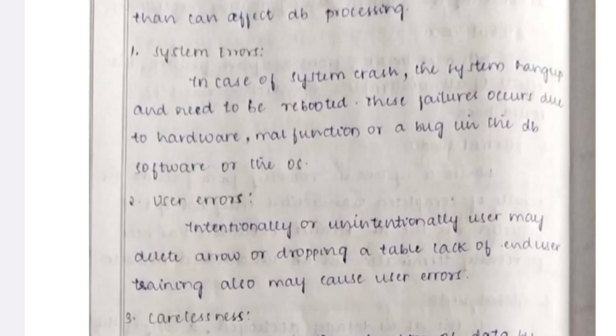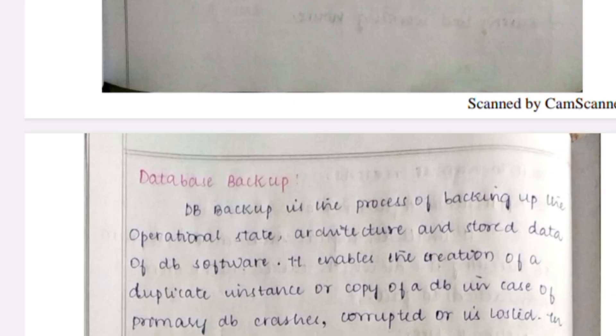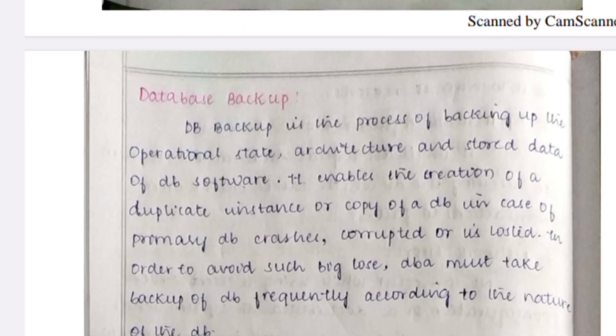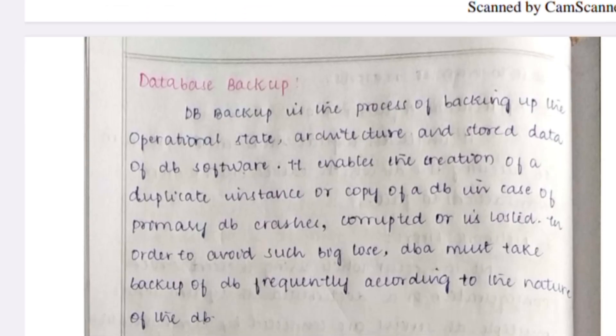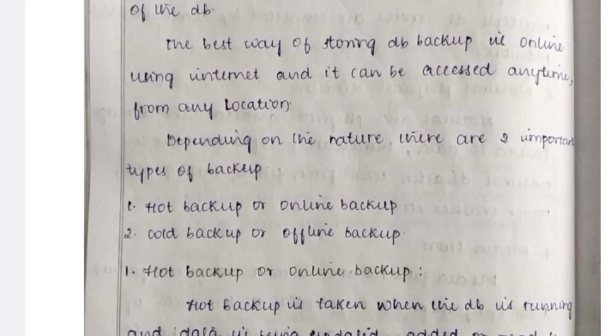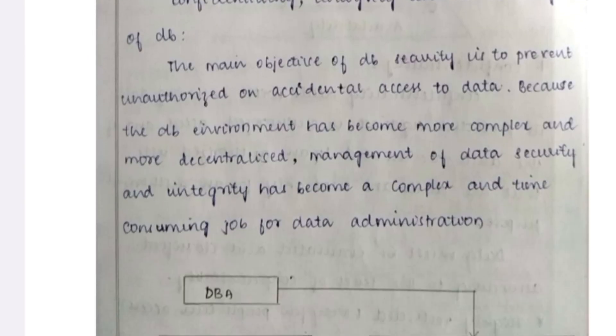Next is database backup. The best way to store and back up data is online — it can be accessed anytime and anywhere. There are two types of backup techniques: online backup (also known as hot backup) and offline backup (also known as cold backup).